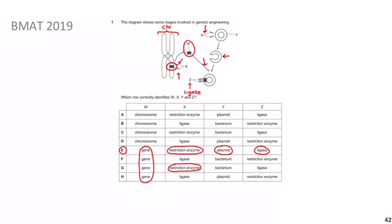A time-saving tip: once we established W must be either E or H, and X narrowed it to E or G, we could just confirm Y is a plasmid — which it is — and that gives us E directly without even needing to verify Z.